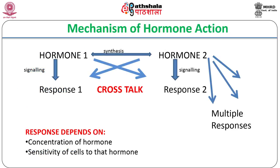Most hormones show pleiotropic effects, i.e., they can simultaneously influence a number of diverse processes. They do so either by influencing the synthesis of one another or due to crosstalk in their signaling pathways.